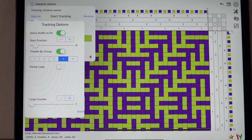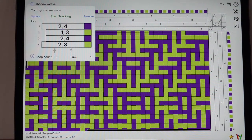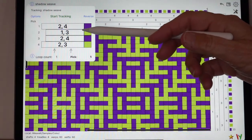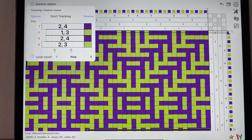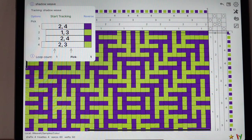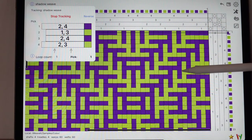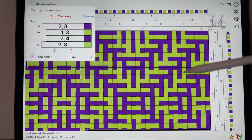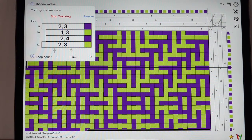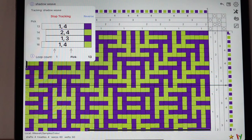In your options you can pick treadle by group. And if you have, usually I like to do about four threads. I can think well with about four threads. So I treadle four threads at a time. And that means you only have to tap it every fourth pick. You can also show the shafts to lift. If you're working on a table loom, that makes a lot of sense. You can set the start position and you can set the loop counter. We'll put the start position back to one. And we pick done. And you're now back to one. Now what you're seeing is the shafts to lift. So if you're on a table loom, that makes a lot of sense. You see that we're on loop one and pick one. I start tracking. I tap the screen and it jumped four picks. I tap the screen and it jumped four picks. So in this case, you weave pick 9, 10, 11, and 12. And when you've completed picking 12, then you advance the screen again.